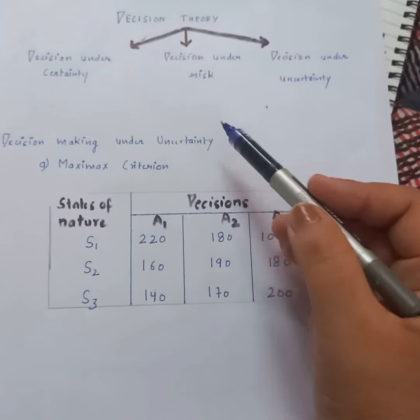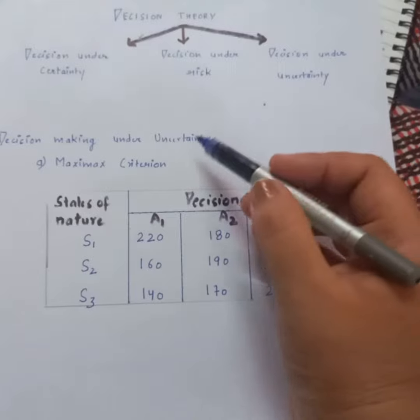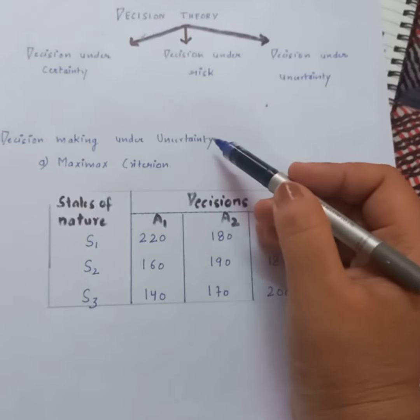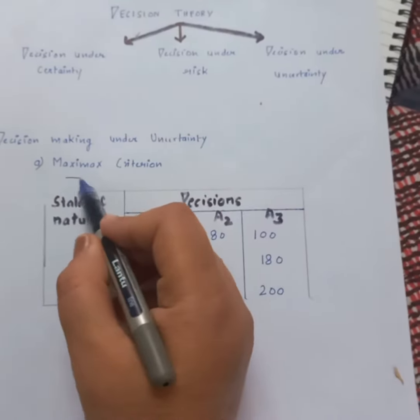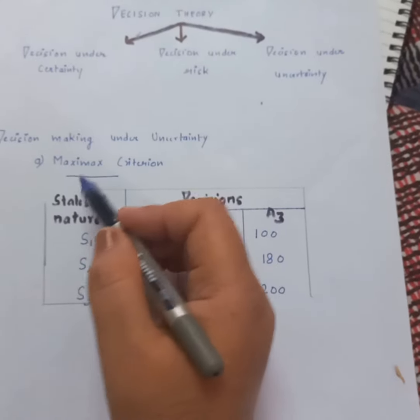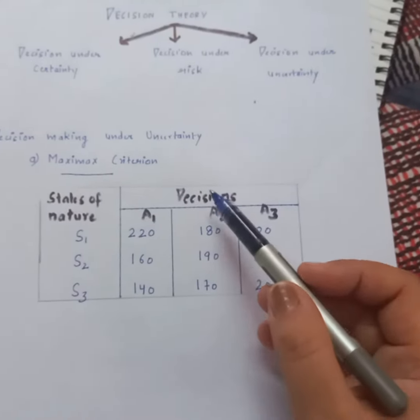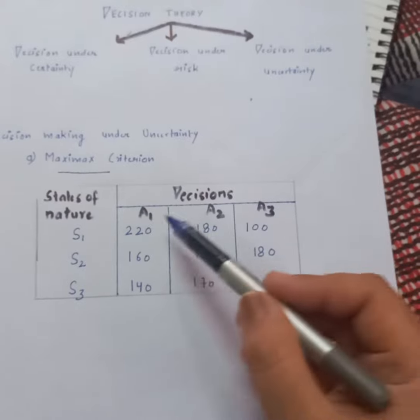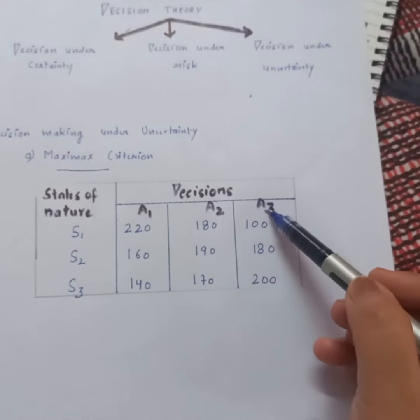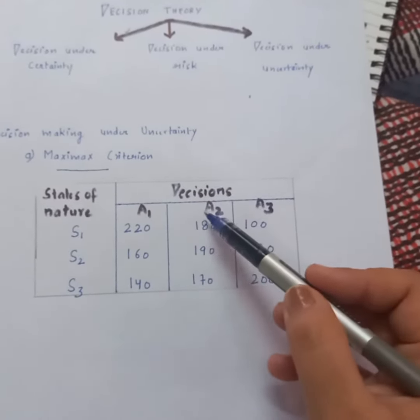Now, there are different criteria. The first criteria is Maximax criteria. Let's understand that. Maximax means maximum of the maximum. So, let's say we have three alternative courses